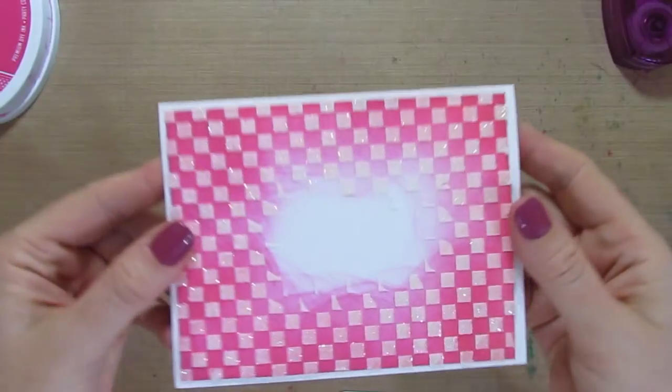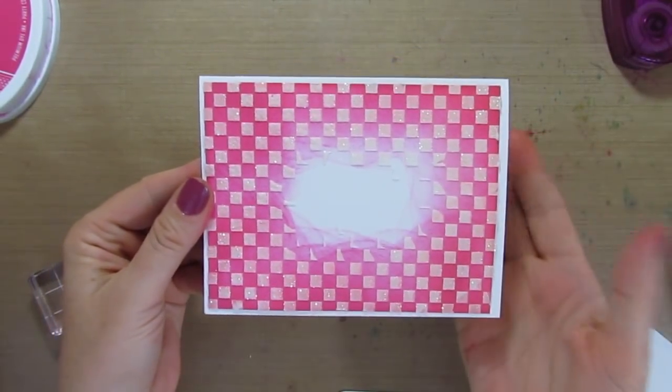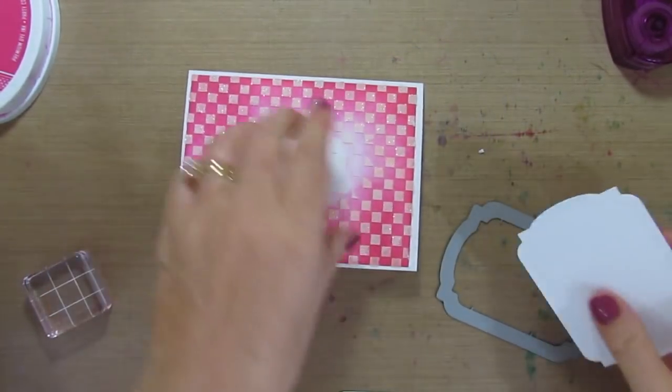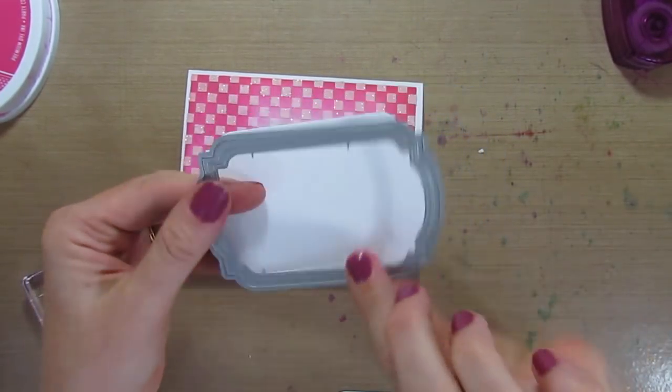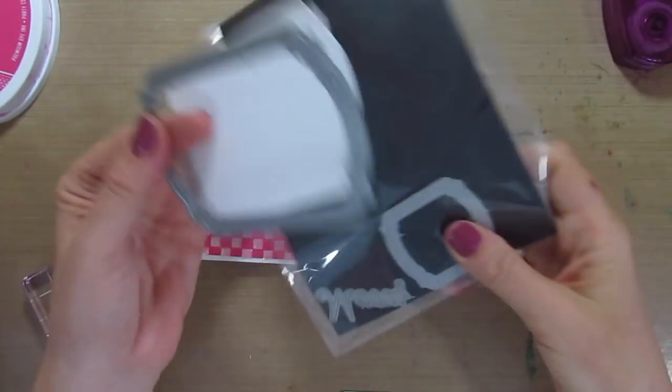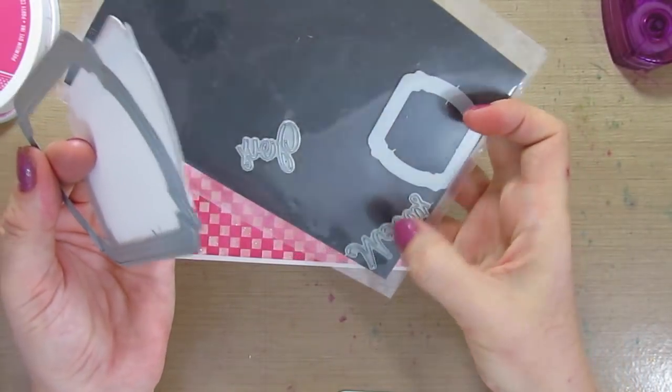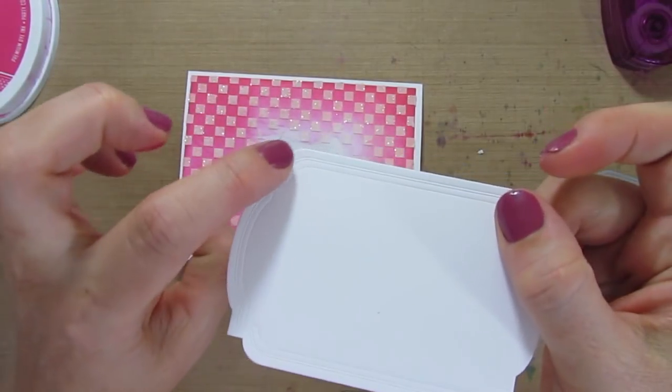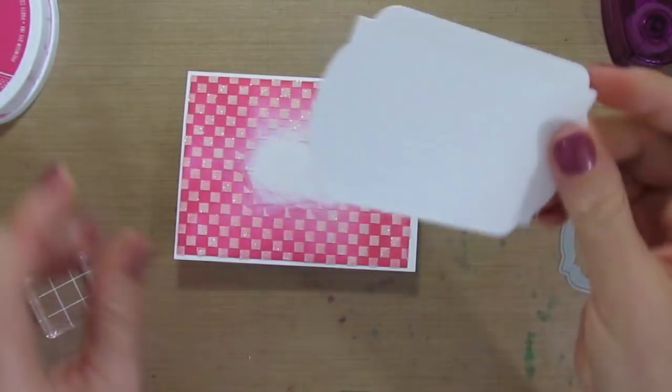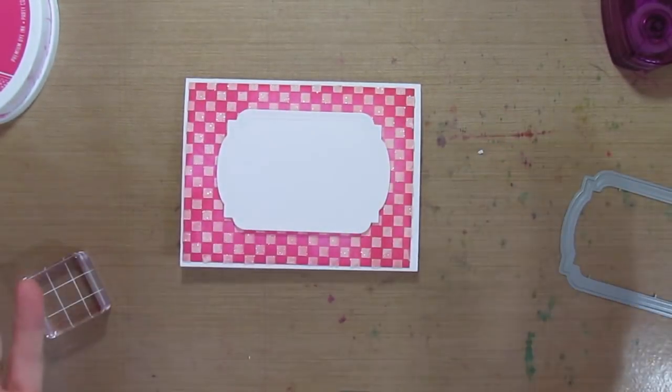So here's how it's shaping up so far. We have this fun technique piece with a card base behind it, and then I thought I would use the Merry Labels die. This comes with the large label, the small label, and then Merry and Joy sentiment dies, and it makes a really great embossed frame around the edge, so it's a very nice accent to your cards.